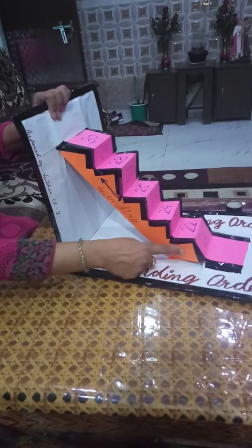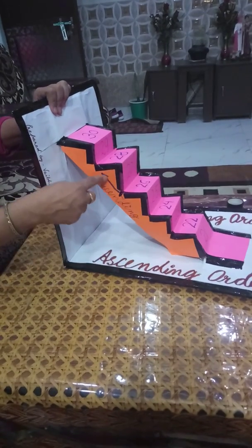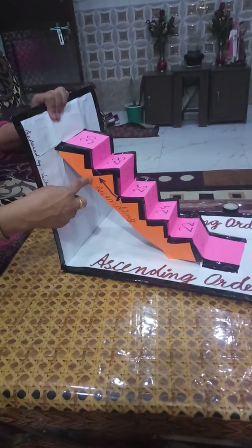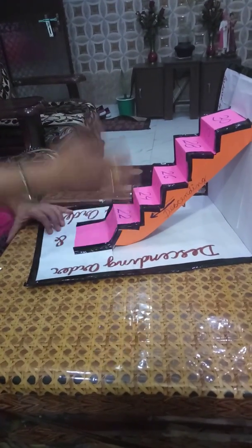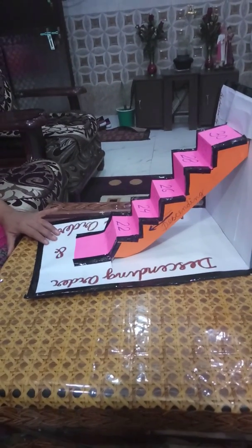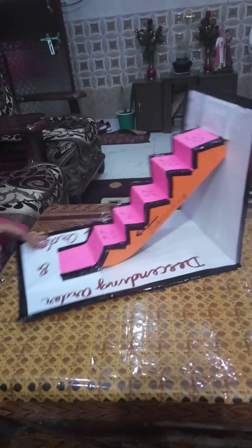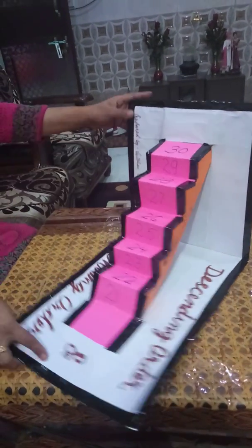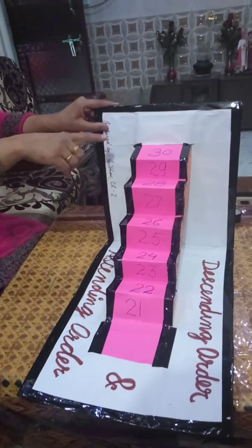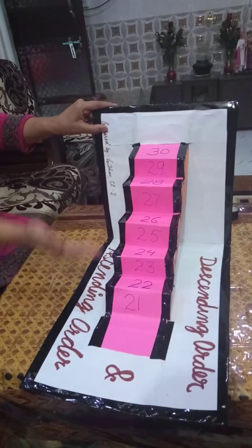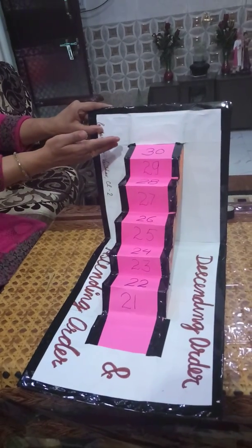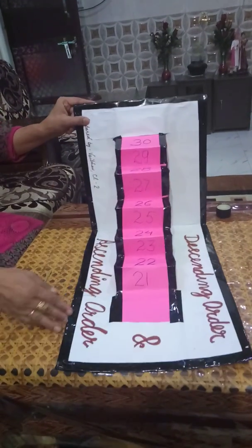When we go upstairs, that is ascending order. When we go downstairs, that is descending order — from a higher position to a lower position is descending, and from a lower position to a higher position is ascending.